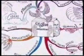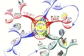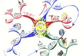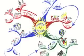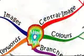Mind mapping is straightforward and fun. We start in the centre of a blank page. We connect branches to the central image and connect second and third level branches to the first and second and so on.